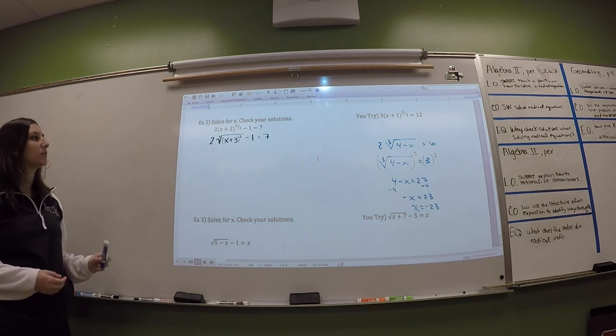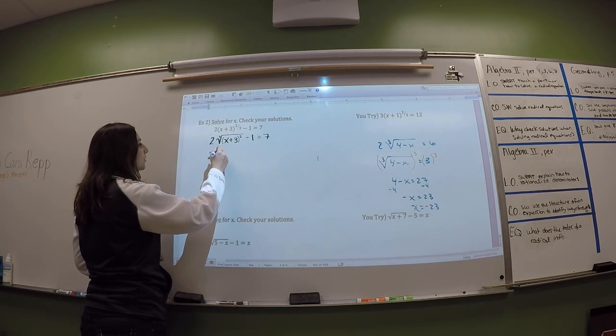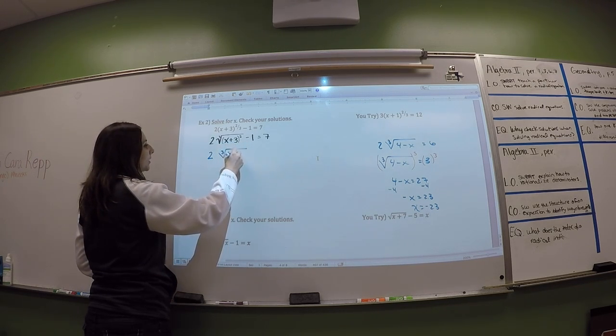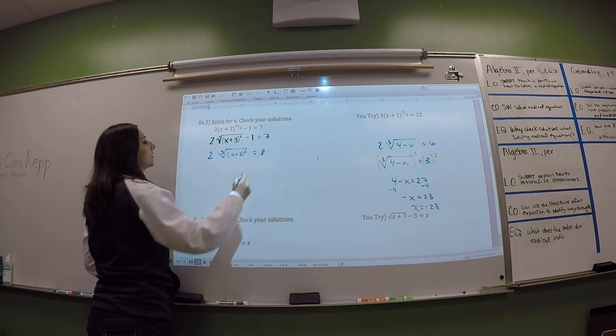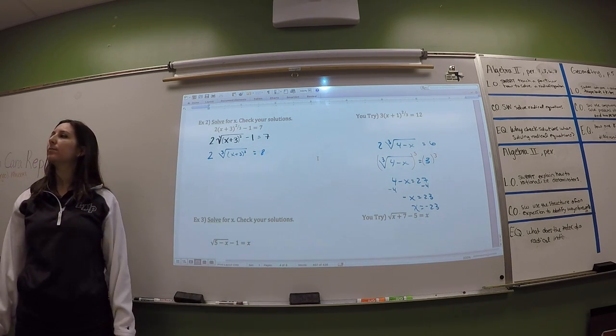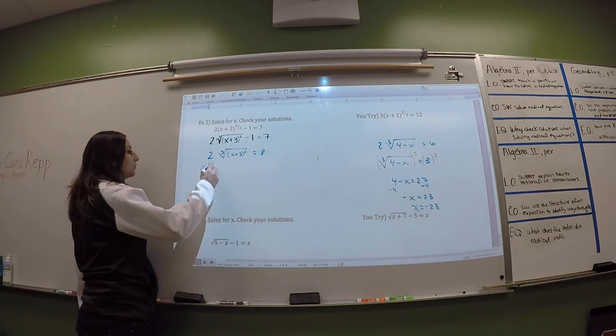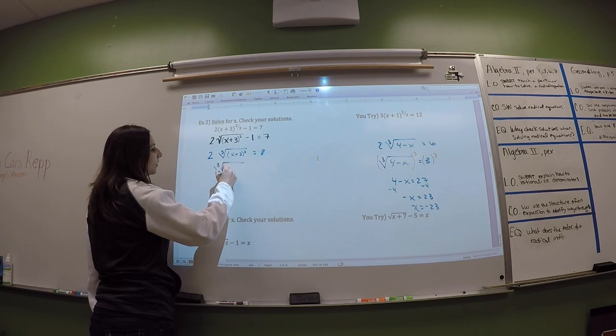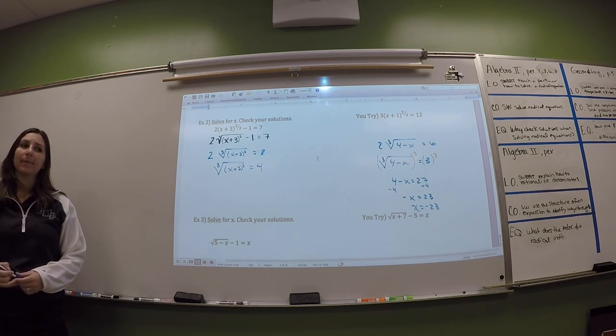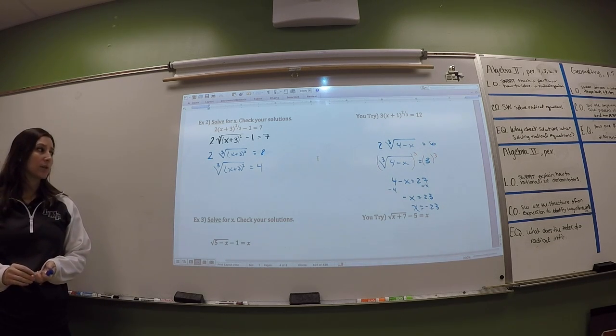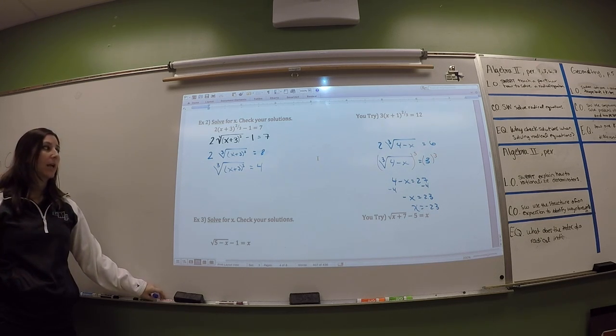So that's what it would be if it was written in its radical form. All right, so we're going to start this the same way we started the other ones. We're going to add 1. So 2 times the cube root of the quantity of x plus 3 squared equals 8, because we added the 1. And then we can divide by 2. So we get the cube root of x plus 3 squared equals 4. So now what we're going to do is we're going to get rid of each one of those operations. We're going to get rid of the cube root, and we're going to get rid of the squared.